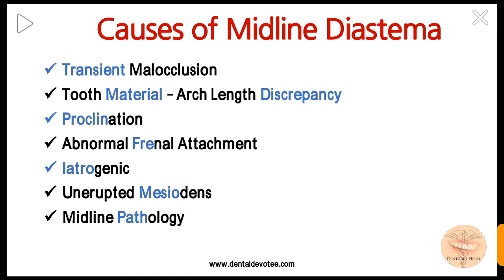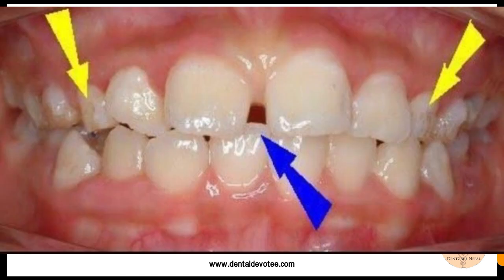Transient malocclusion or self-correcting anomaly is the ugly duckling appearance of a 7 to 8-year-old child where there is midline diastema and anterior open bite. This corrects on itself once the permanent canines fully erupt and come into occlusion.